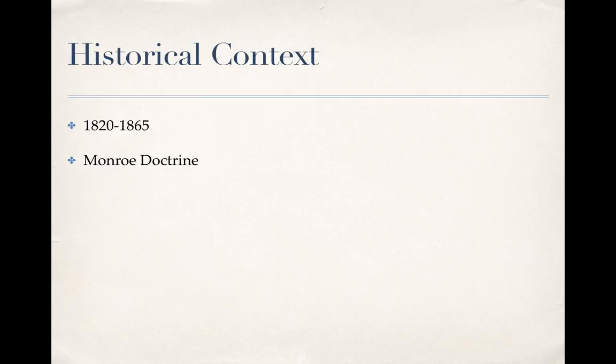The Monroe Doctrine was basically a government doctrine establishing that no other countries were allowed to colonize in the continental United States — basically saying what's out west is our territory and we don't want British, French, or Spanish colonies. It was really just, particularly with westward expansion, a claim of ownership from our government. So there was a lot of movement out west during this time period.